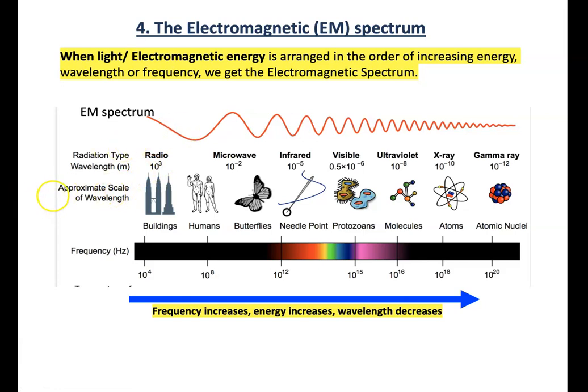And microwaves are much smaller. It's 10 to the, it's a meter divided by a hundred. So the wavelength is in the centimeter range. Infrared is a meter divided by one, ten, five zeros. So as we go this way, the wavelength becomes smaller.